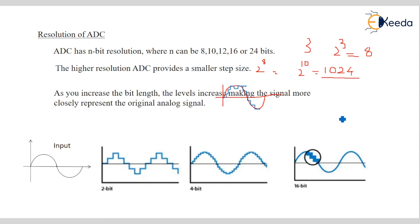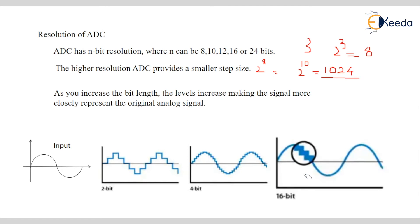As you increase the bit length, the levels increase. As you increase the bit length, the level increase making the signal more closely represents the original signal. Here is a 16-bit ADC. So, 2 raise to 16. It comes with 32,000. 2 raise to 16. It gives, sorry, it gives 65,536.